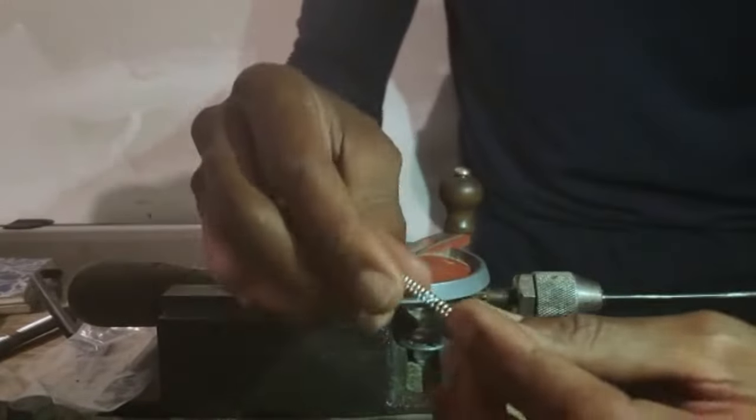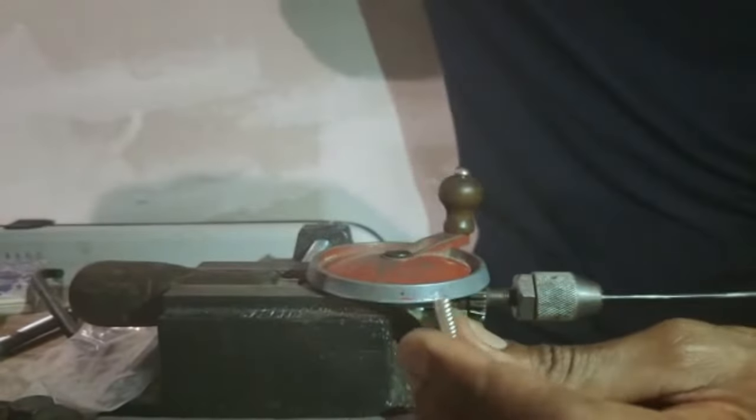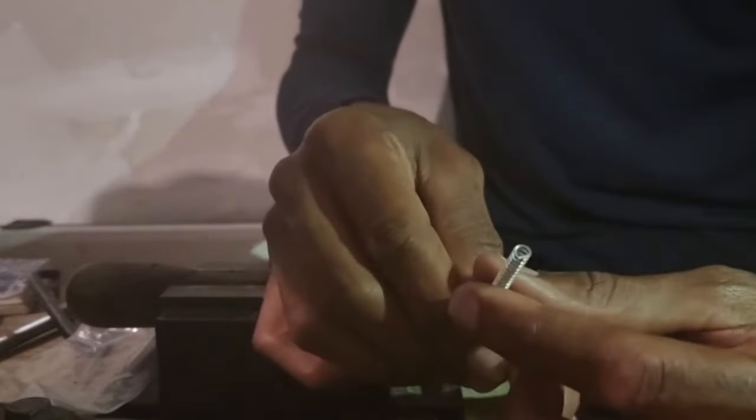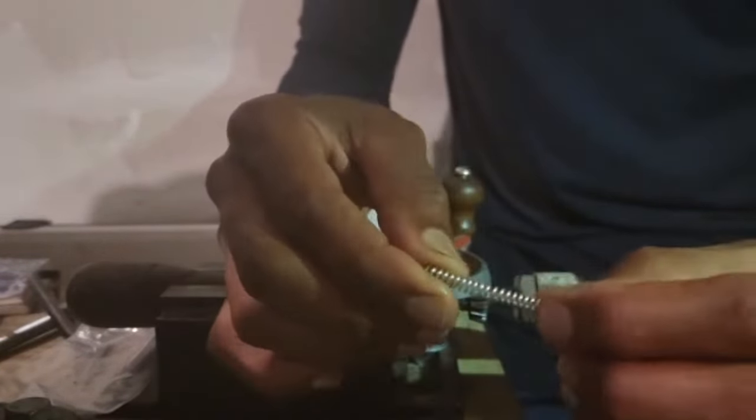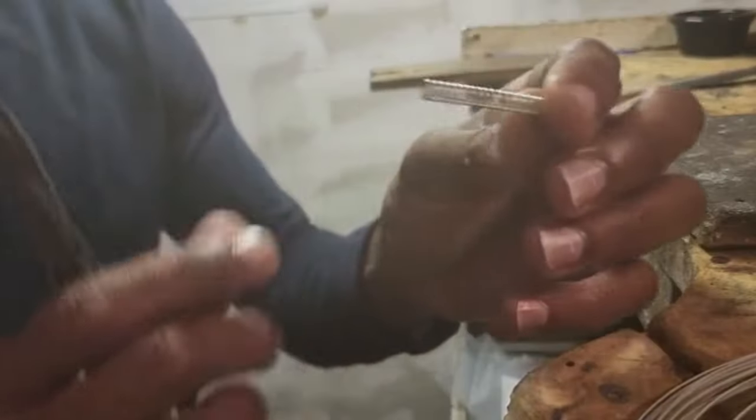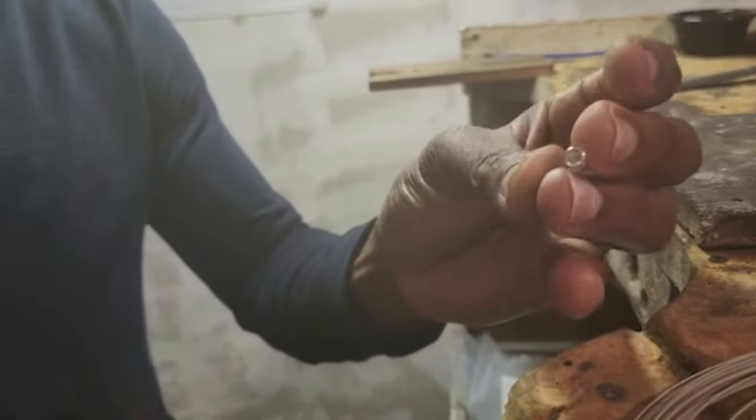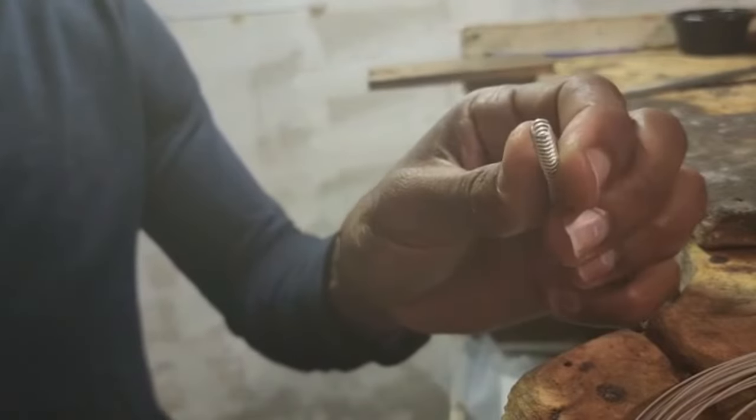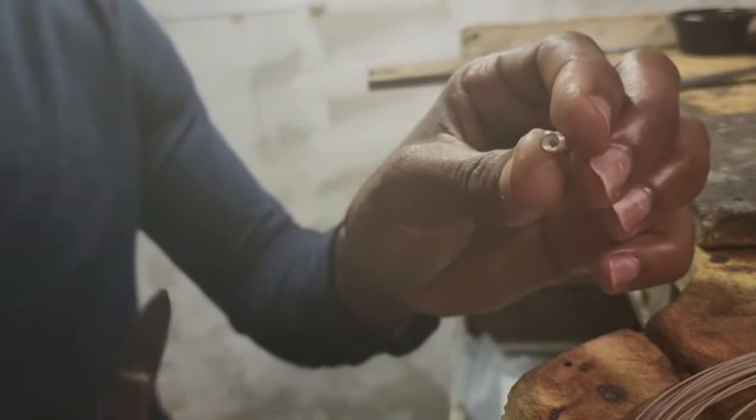So this is a basic example. This is the example of the spring that we're going to use to create the links. So we're going to cut the spring in even portions so that we can create the links for the chain.